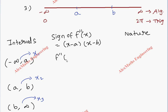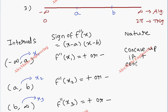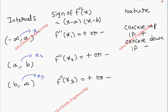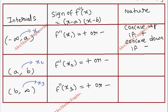We substitute these values into f''(x): we check f''(x1) — positive or negative; f''(x2) — positive or negative; and f''(x3) — positive or negative. If f''(x) is positive, then we say the function is concave upward; if it is negative, then it is concave downward. In this way we determine the nature in each interval.